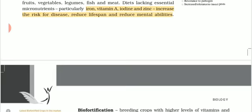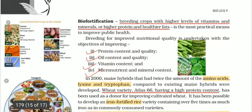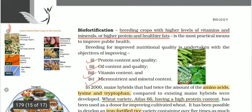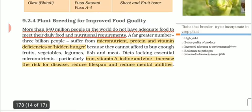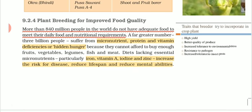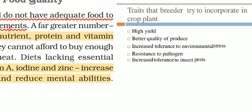So on your page here is biofortification. Let's first discuss what are the aims behind plant breeding. Number one is high yield — we want to improve the quantity. Number two is better quality of produce. The produce can be any fruit, vegetables, or crops such as cereals, pulses, etc.